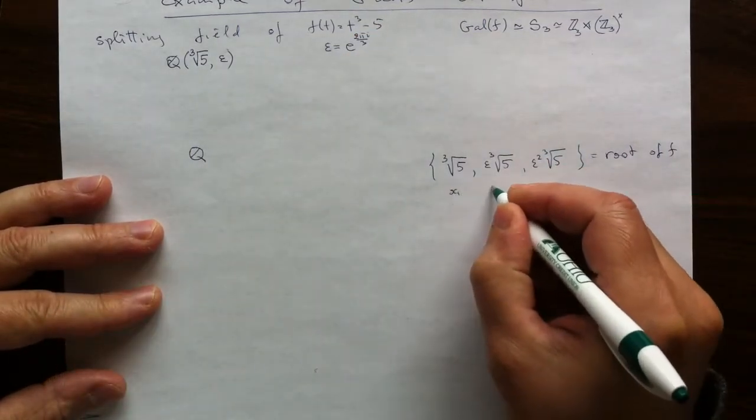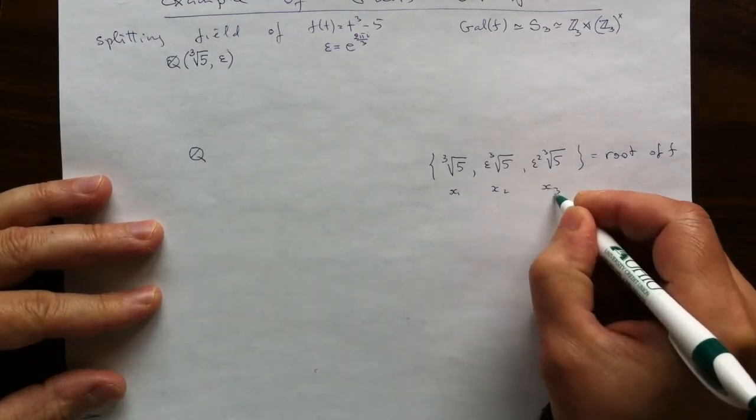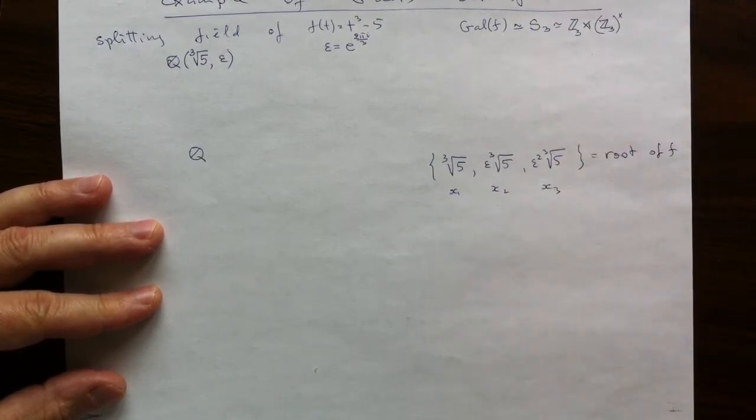And then we can call them x1, and x2, and x3. And then the symmetry group, just the group of permutations of them.